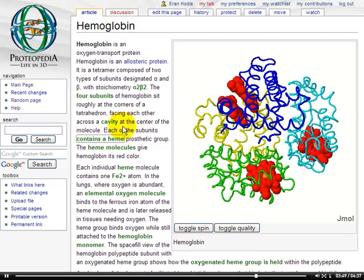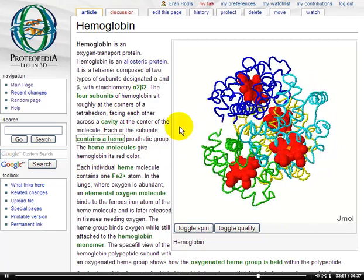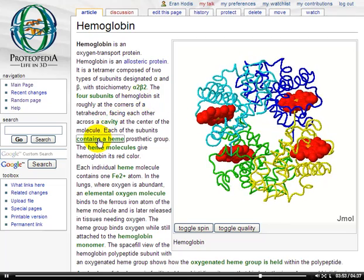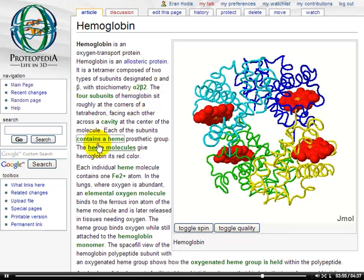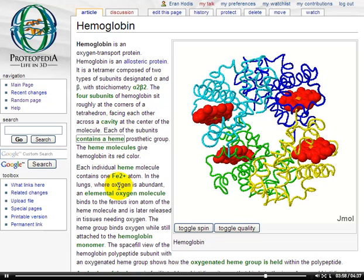Perhaps it begins with an overview showcasing a representative structure. Perhaps the page contains a section on high-impact hemoglobin mutants. And of course, the page should link, in an organized way, to many of the relevant PDB entry pages that share its topic.